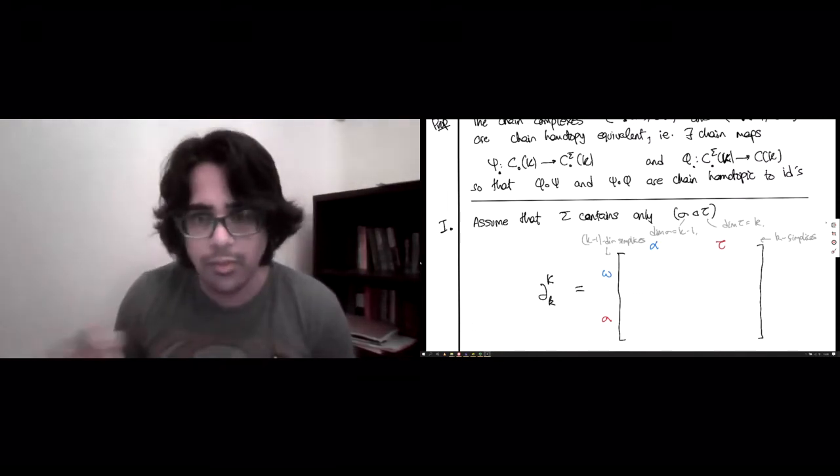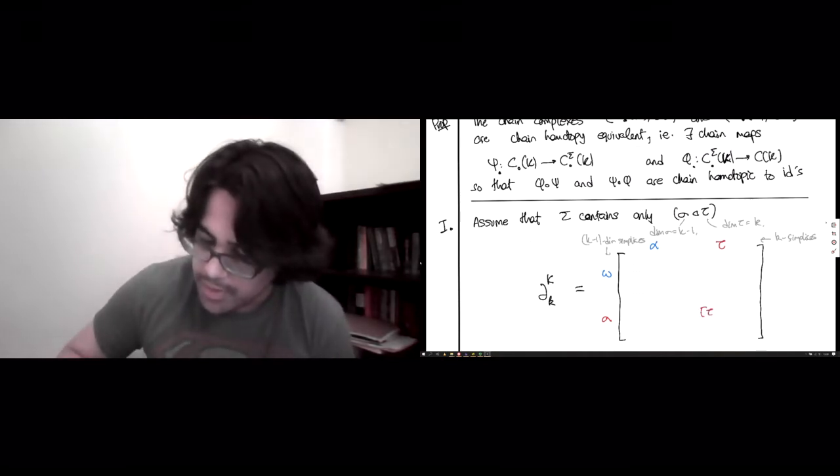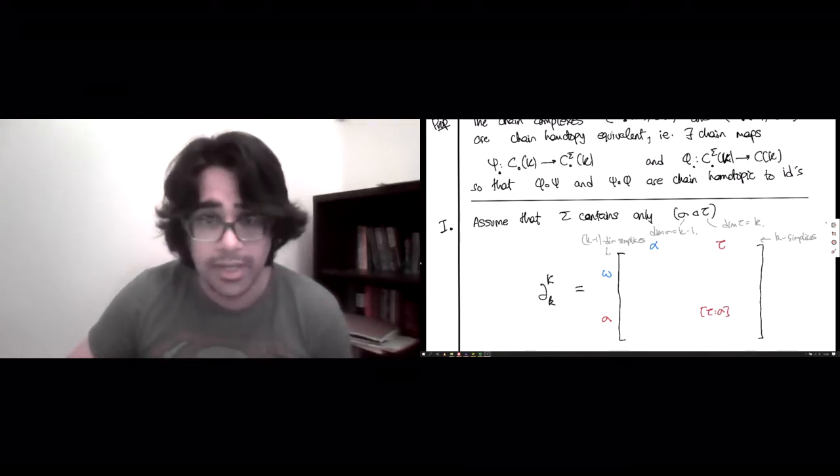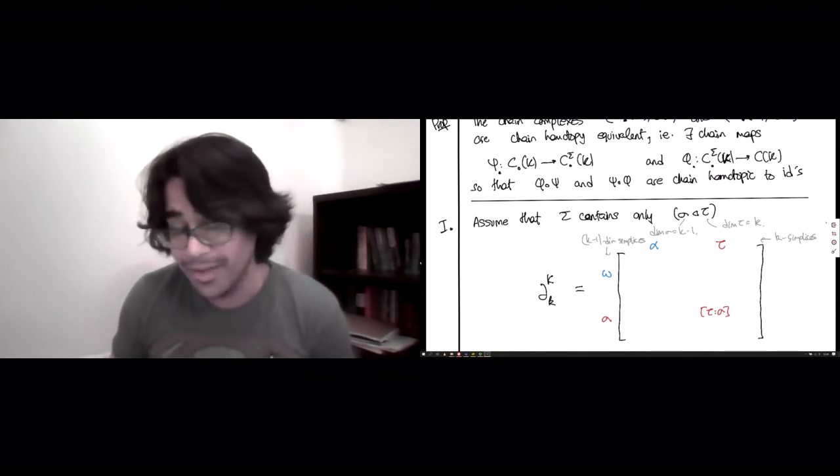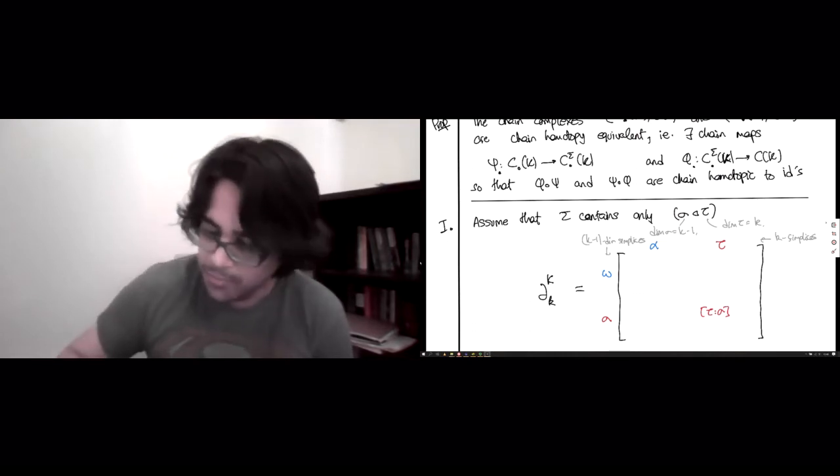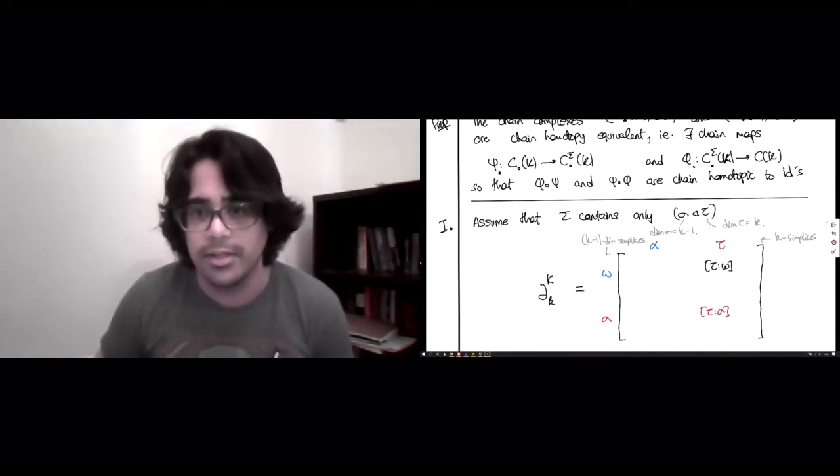And now, corresponding to these four simplices that we've chosen, there are four numbers that are going to be important. The first one is this incidence between tau and sigma, which we know for a fact because sigma is a face of tau of codimension 1. Whatever on earth that number is, it's either plus 1 or minus 1, but it's not 0. That's all we need right now, it's not 0. Here we have some number tau omega, and we have no control over it. It's 0 minus 1 plus 1, depending on whether or not omega is an odd, even, or not a face of tau. Similarly, alpha omega, no control over this either, and alpha sigma.